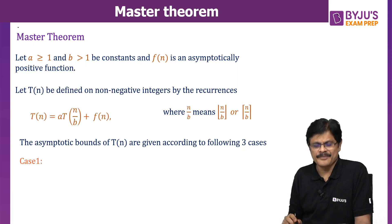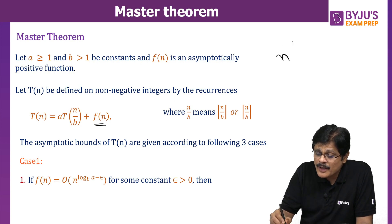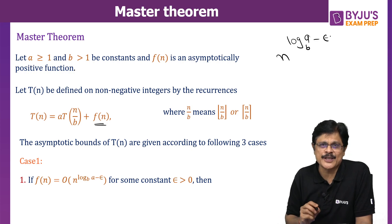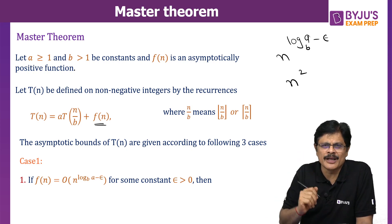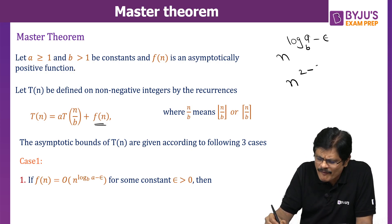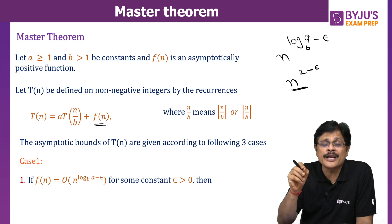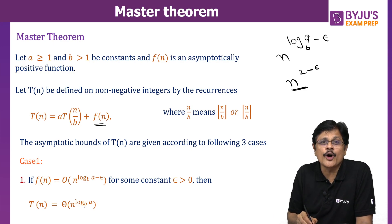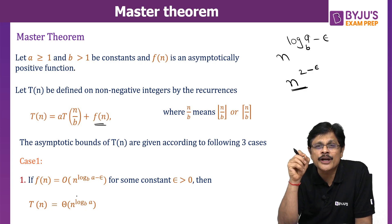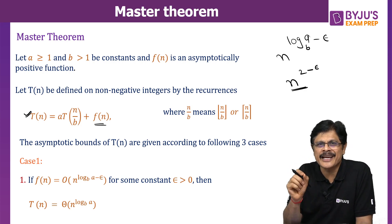Let us consider Case 1. In Case 1, F(n) is O(n^(log_B A − ε)). The idea here is that n^(log_B A) — suppose it equals N² — is a polynomial, and even after subtracting some small value ε from the exponent, this term still dominates F(n) as an asymptotic upper bound. If that happens, then T(n) is Θ(n^(log_B A)).